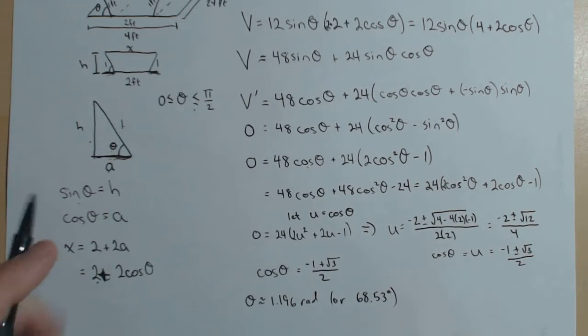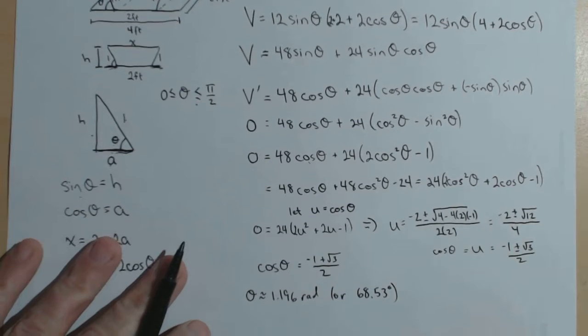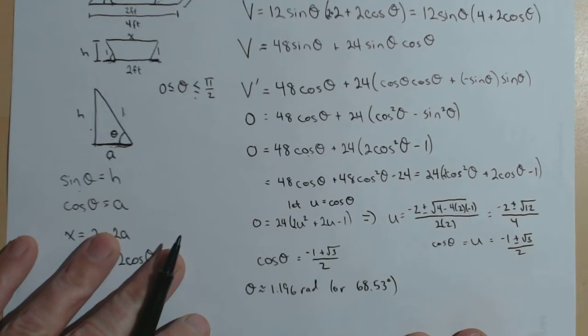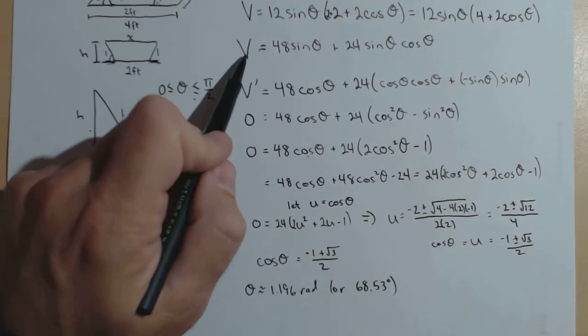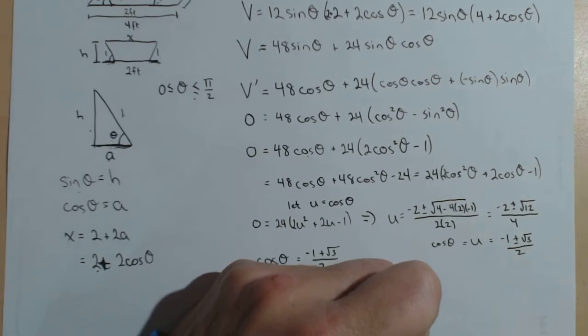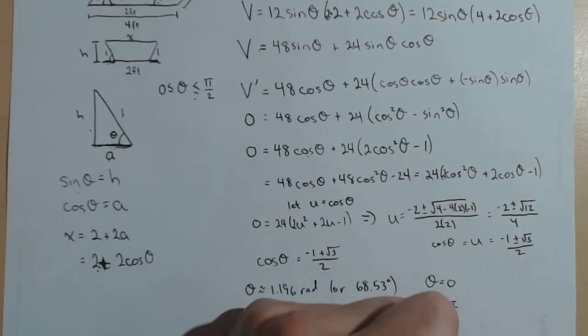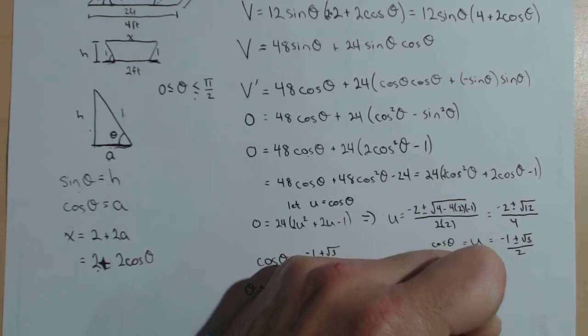So, we're in between that 0 and 90, like we need it. And so, now, we look at the absolute max and the absolute min. And we're going to evaluate our volume at theta equals 0, theta equals pi over 2, and theta is approximately 1.196 radians.